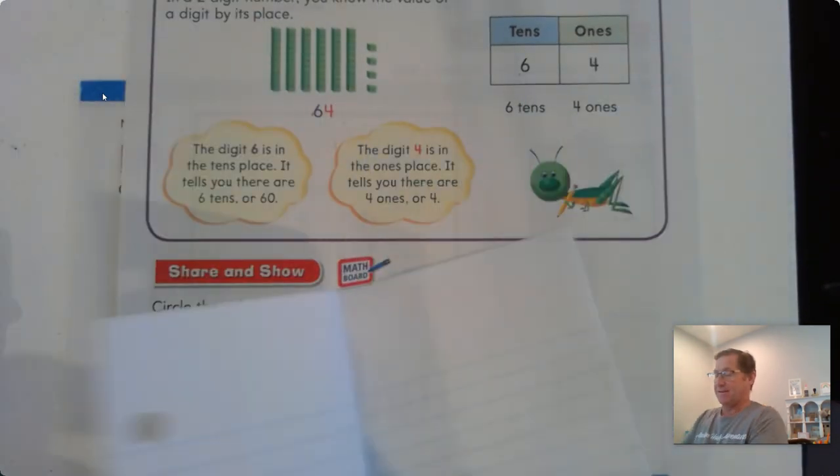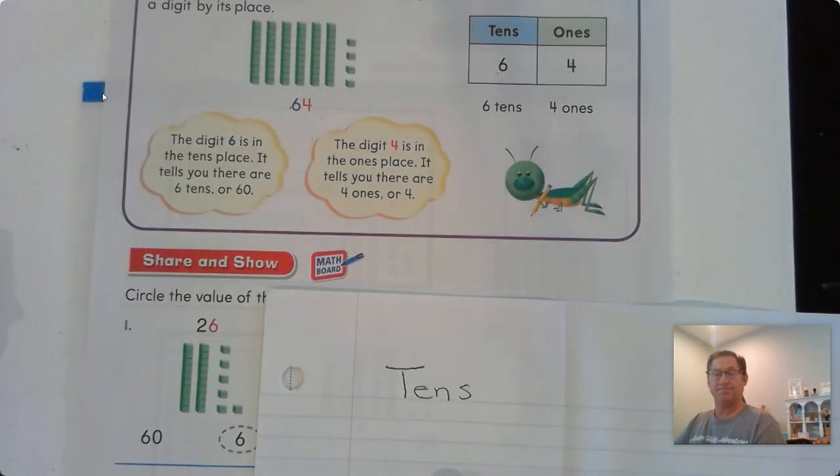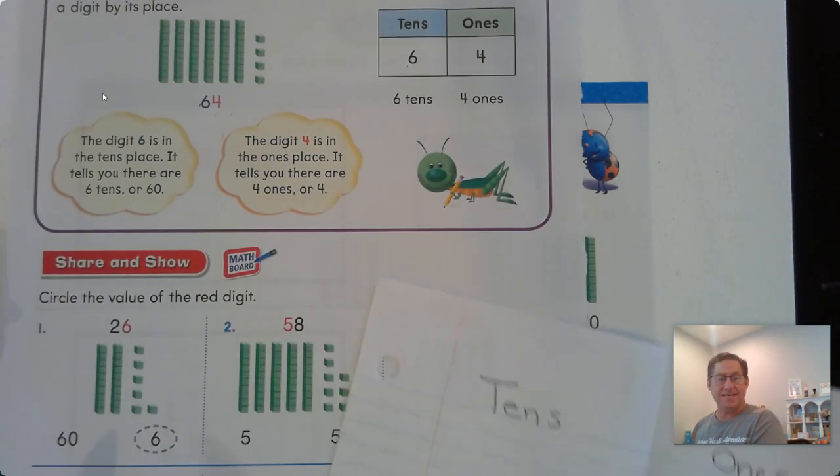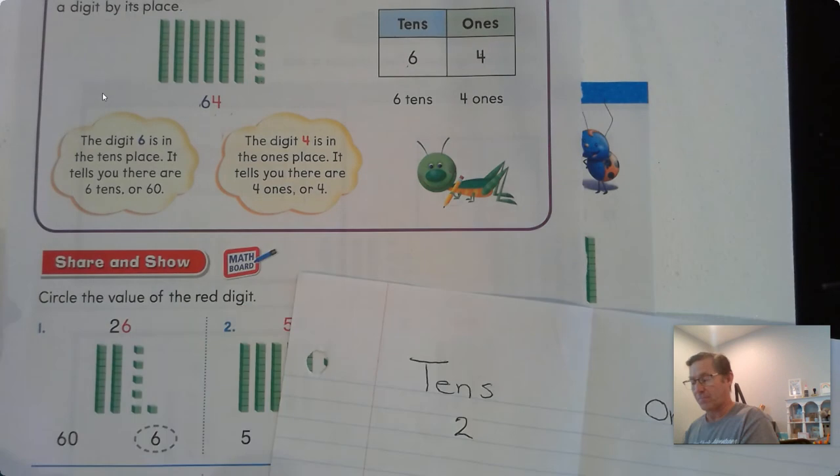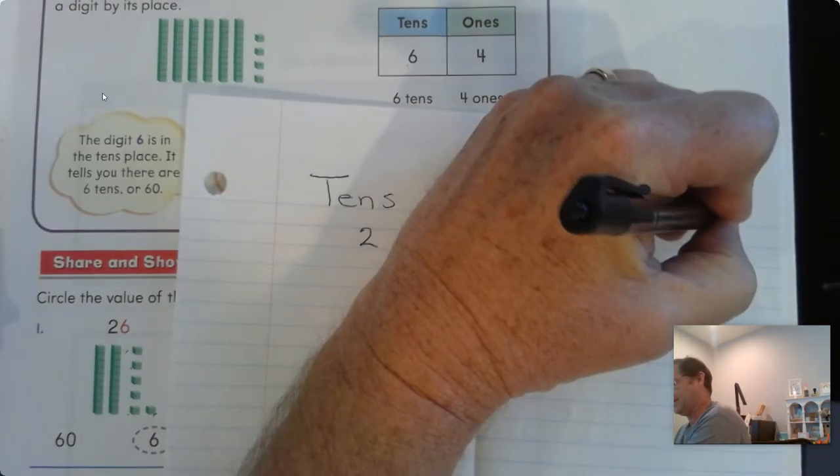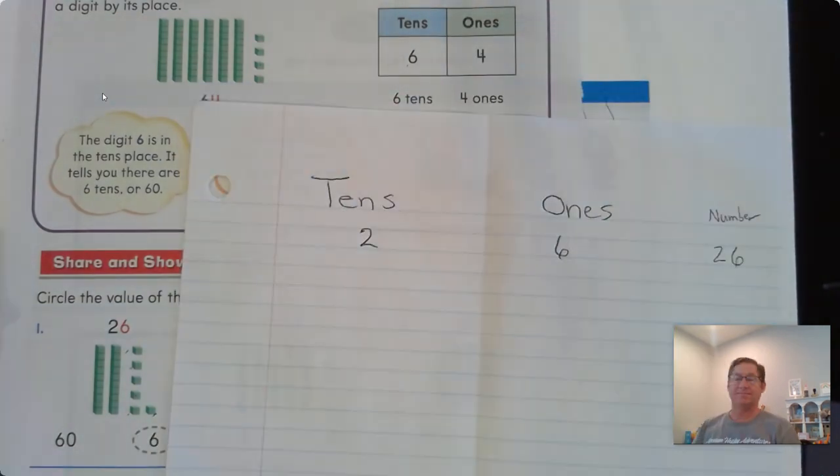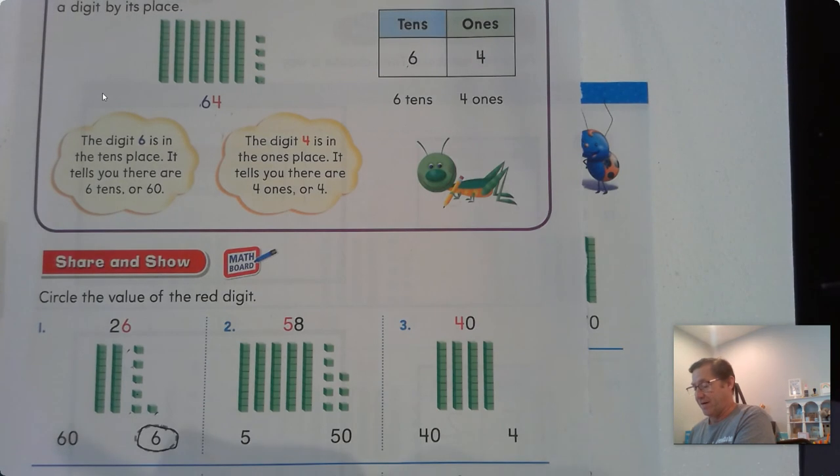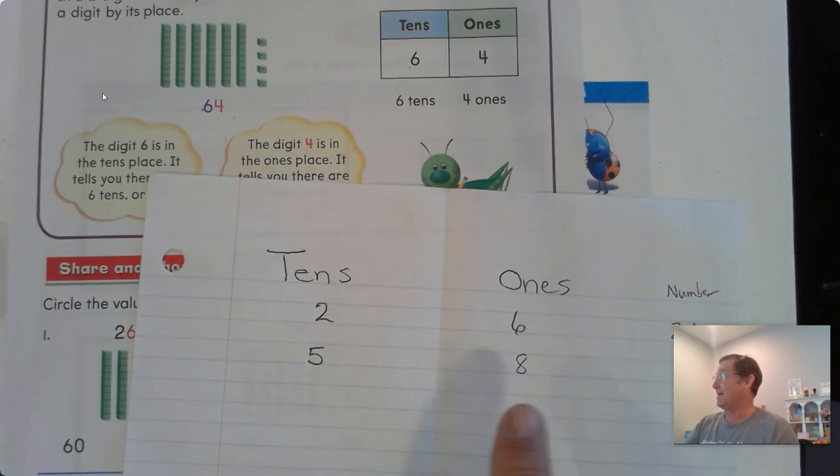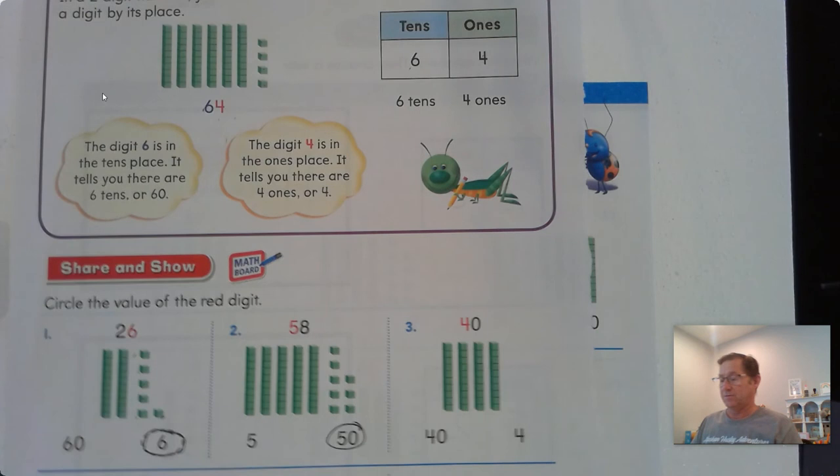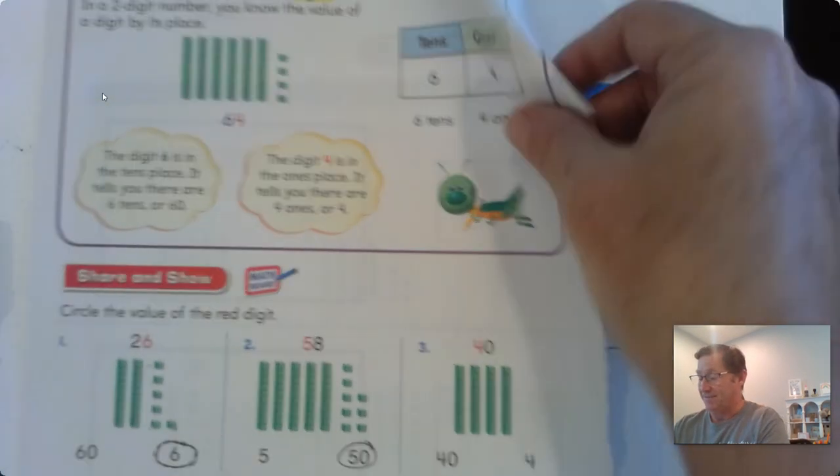Circle the value of the red digit. If you get a piece of paper, fold it over in half, and at the top of your paper write tens. In the right-hand side, write ones. So we can just write these. Problem 7: 26. How many tens do you see in 26? I see 2 tens and 1, 2, 3, 4, 5, 6 ones. So the 6 is in the ones place.